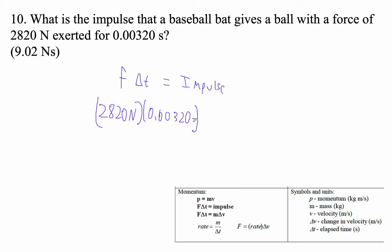A millisecond is a thousandth of a second, just like a milliliter is a thousandth of a liter. Okay, so let's see. So let's go 2,820 times 0.0032. I get 9.024 newton seconds of impulse.